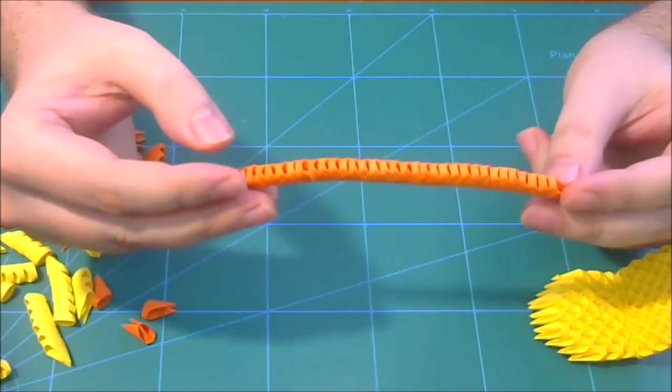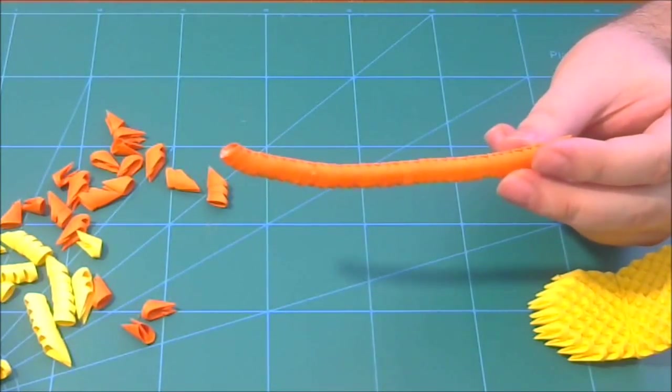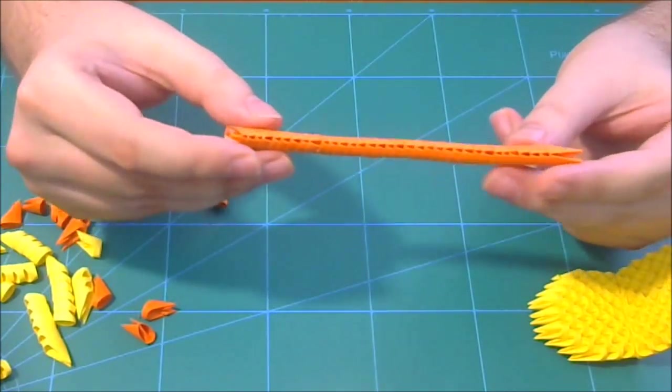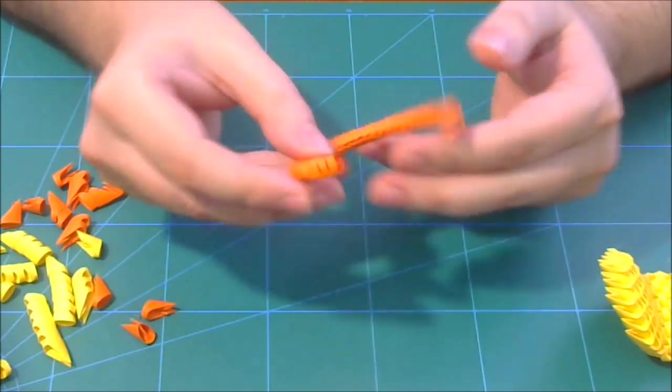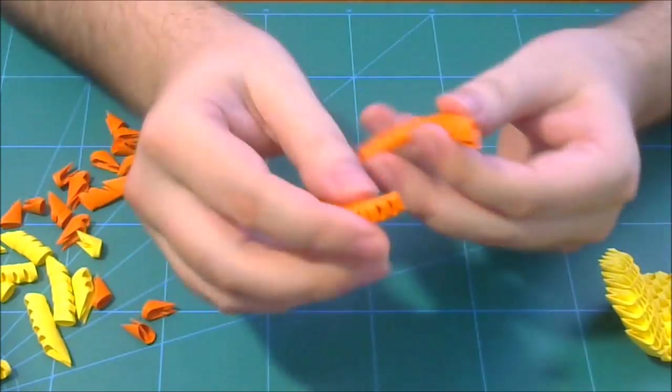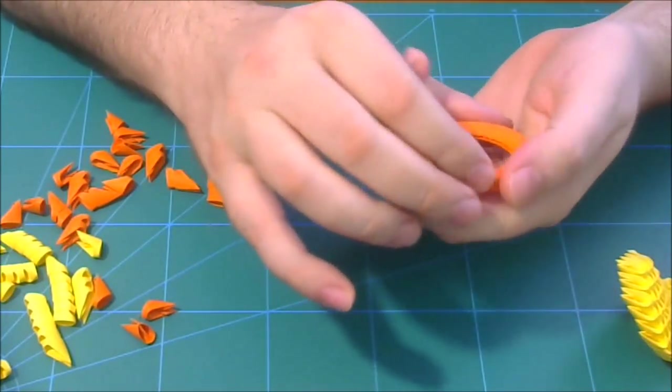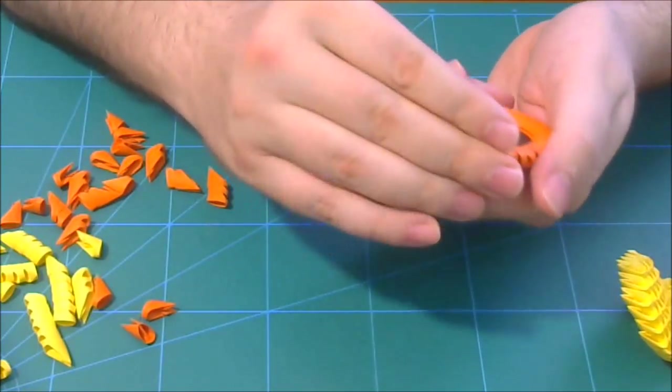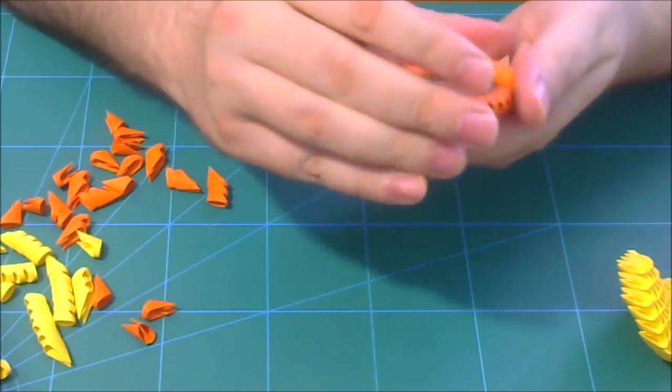Next we connect pieces like this in a row. I connect 34, but you can put one or two more. The idea is to close the circle like this. Repeat 34, 36, whatever number of pieces you need to close this circle.